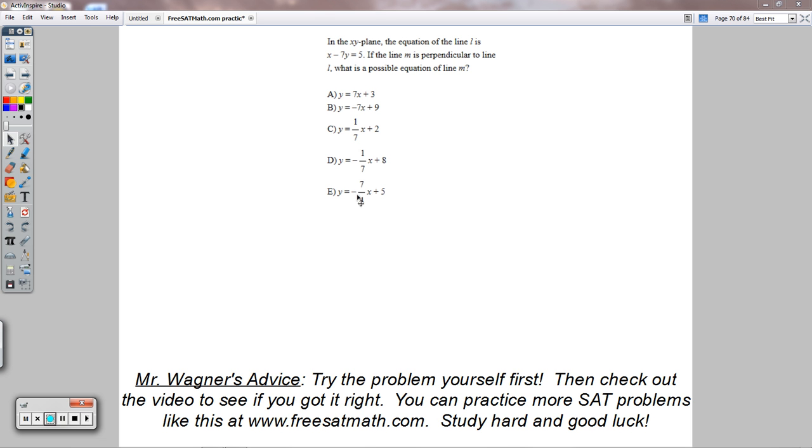Hello everyone, welcome to SAT Math Question 70 here on Wagner Academy. This one says, in the XY plane, the equation of the line L is X minus 7Y equals 5. If the line M is perpendicular to the line L, what is a possible equation of line M?